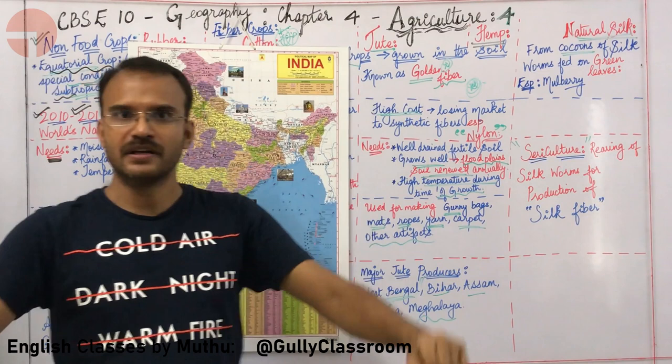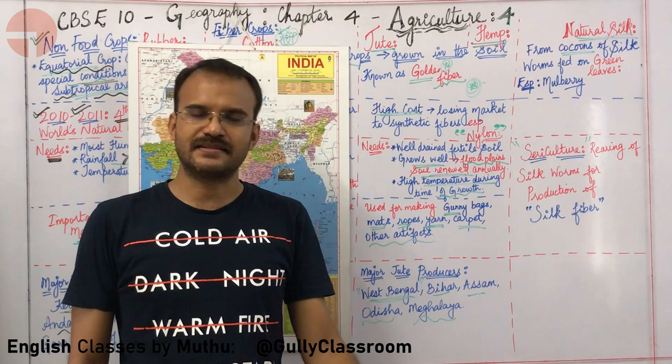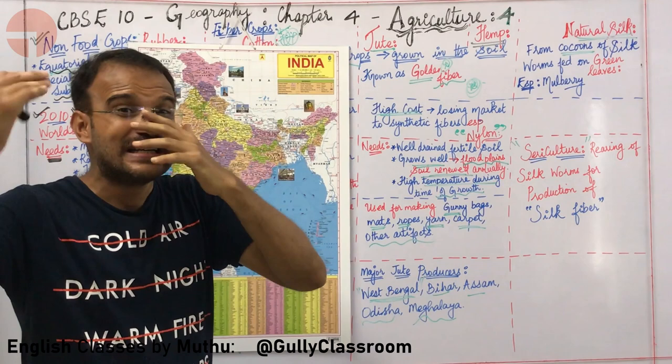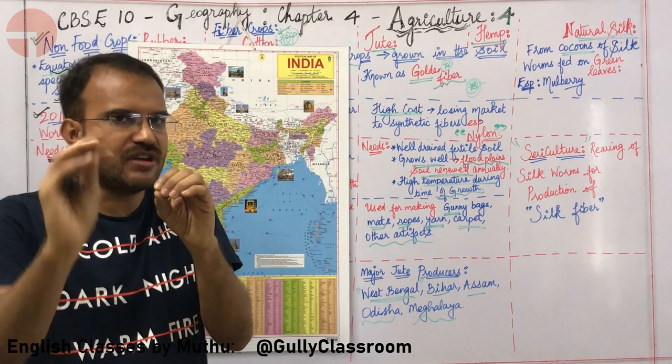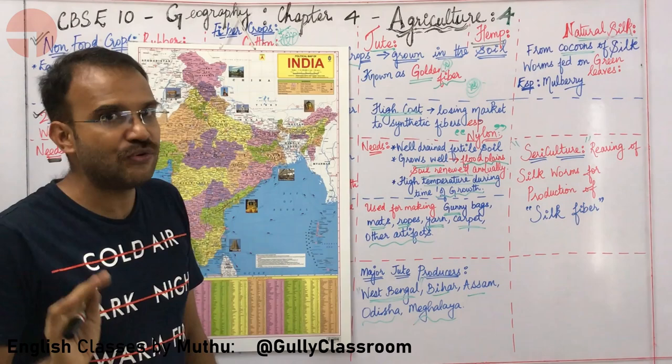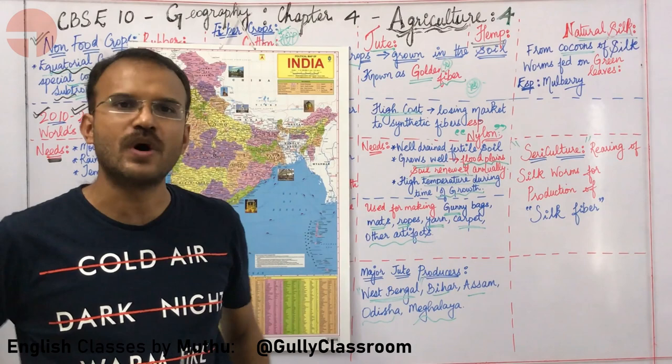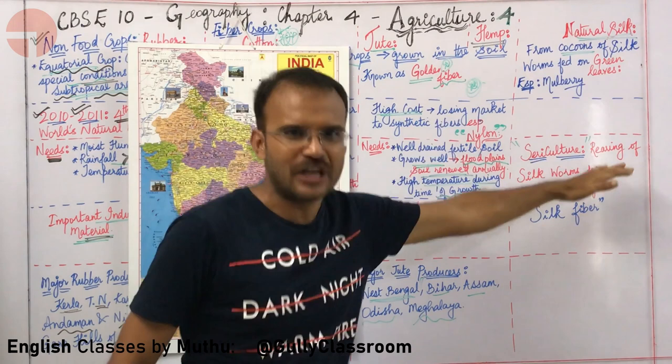Cannabis sativa is also used as a drug — known as ganja in Tamil. However, certain varieties of Cannabis sativa give us industrial hemp, which provides a lot of fiber. Hemp is believed to be one of the earliest plants from which fiber was made.